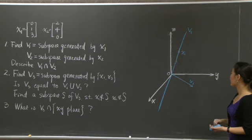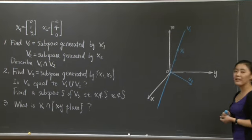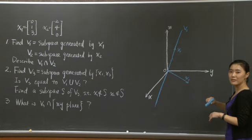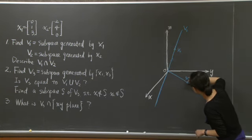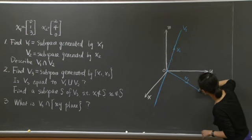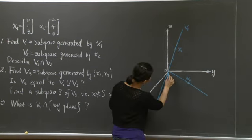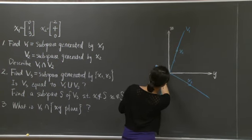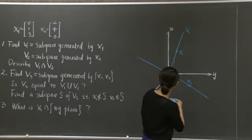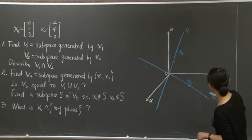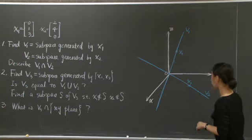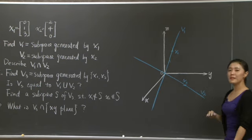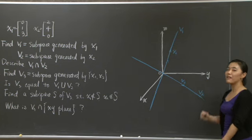Similarly, let's look at x2. What is the subspace generated by x2? Again, you get the entire straight line that contains x2. So I'm going to extend x2 in both directions. That will give me v2. So v1 and v2 are both subspaces of R3.